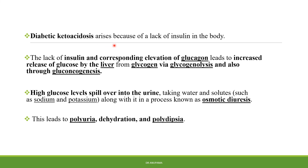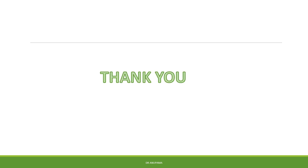Diabetic ketoacidosis arises because of lack of insulin in the body. The lack of insulin and corresponding elevation of glucagon leads to increased release of glucose by the liver from glycogen via glycogenolysis and also through gluconeogenesis. High glucose levels spill over into the urine, taking water and solutes such as sodium and potassium along with it in a process known as osmotic diuresis. This leads to polyuria, dehydration, and polydipsia. Thank you for watching this video.